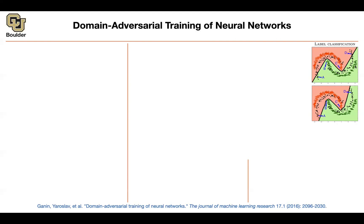If you train a classifier on that — this is your source domain — you are going to get a decision boundary which is correctly classifying the red ones as red, the green ones as green. But then during testing, there could be domain shift or shift in the distribution. All you are doing is looking at these black dots. There is a shift in the distribution compared to the green and the red ones, and then your algorithm — this decision boundary — is going to make mistakes. These clearly belong to a different class. So that decision boundary needs to be adjusted.